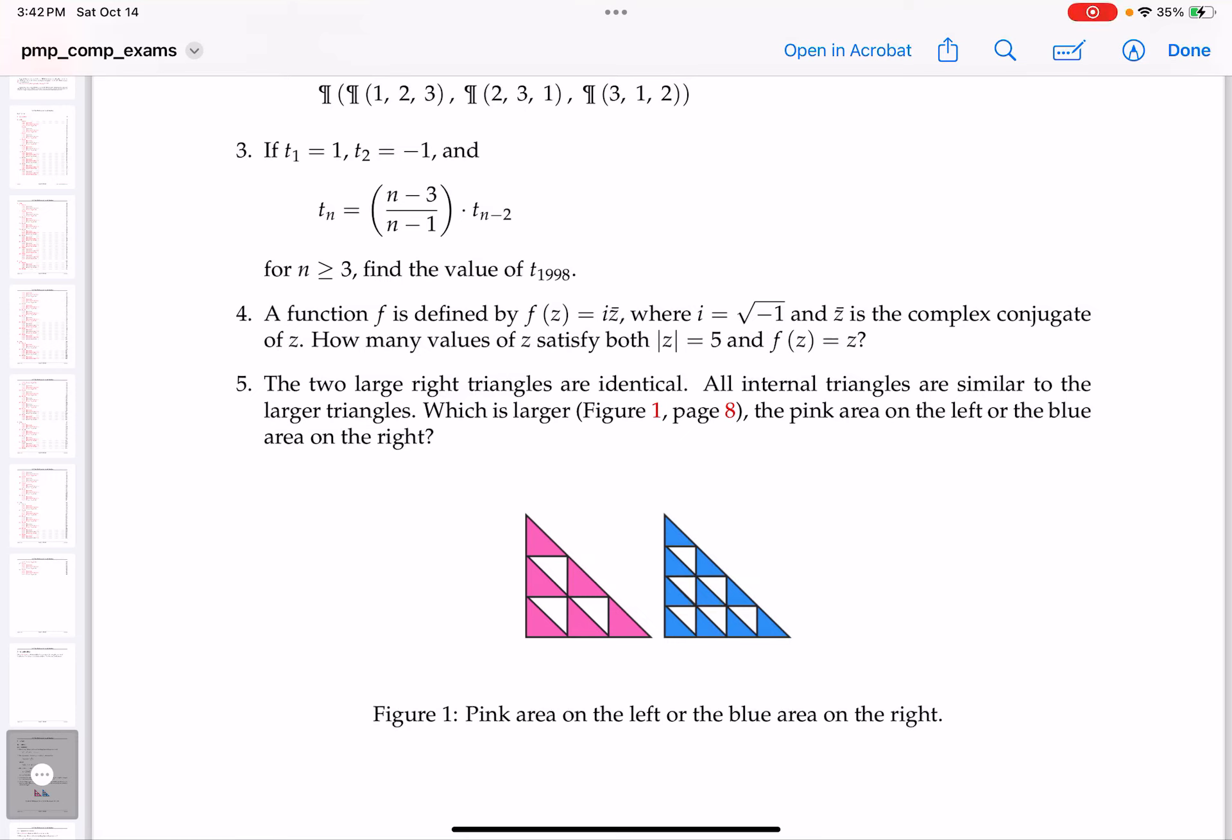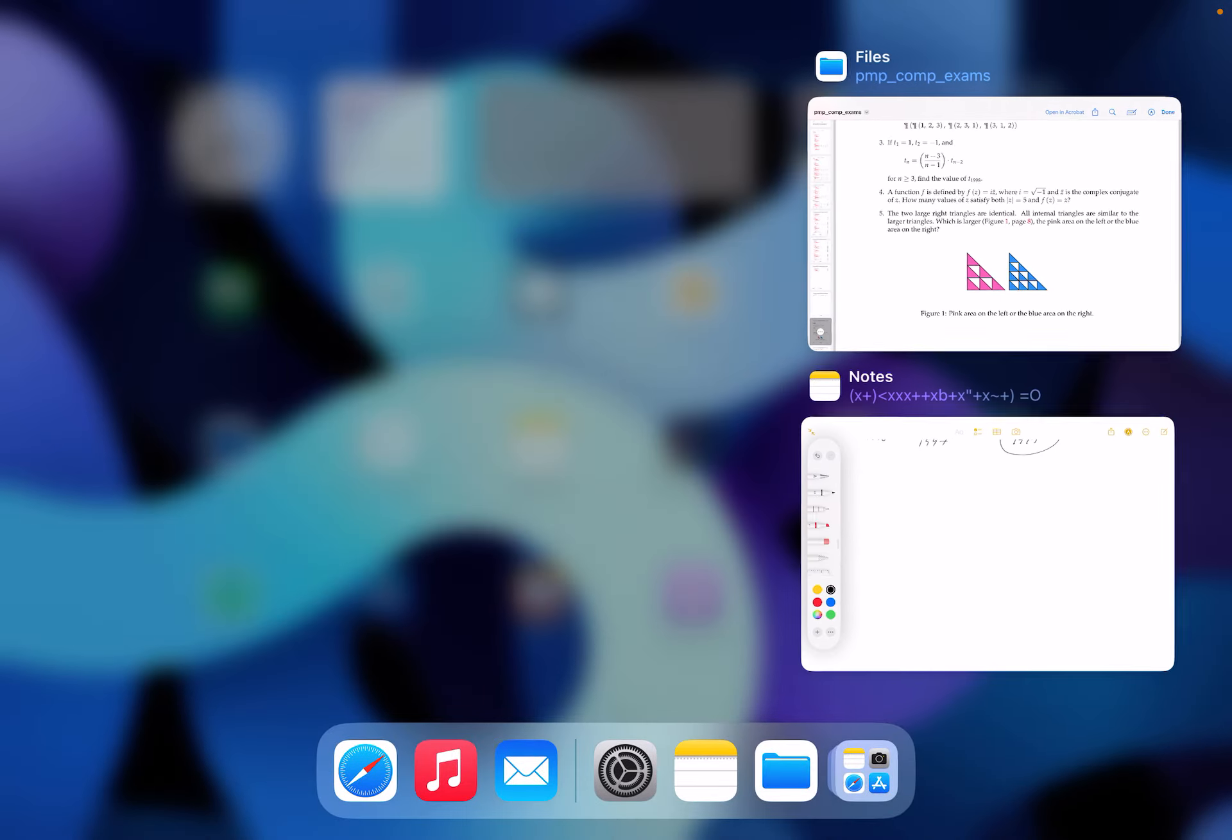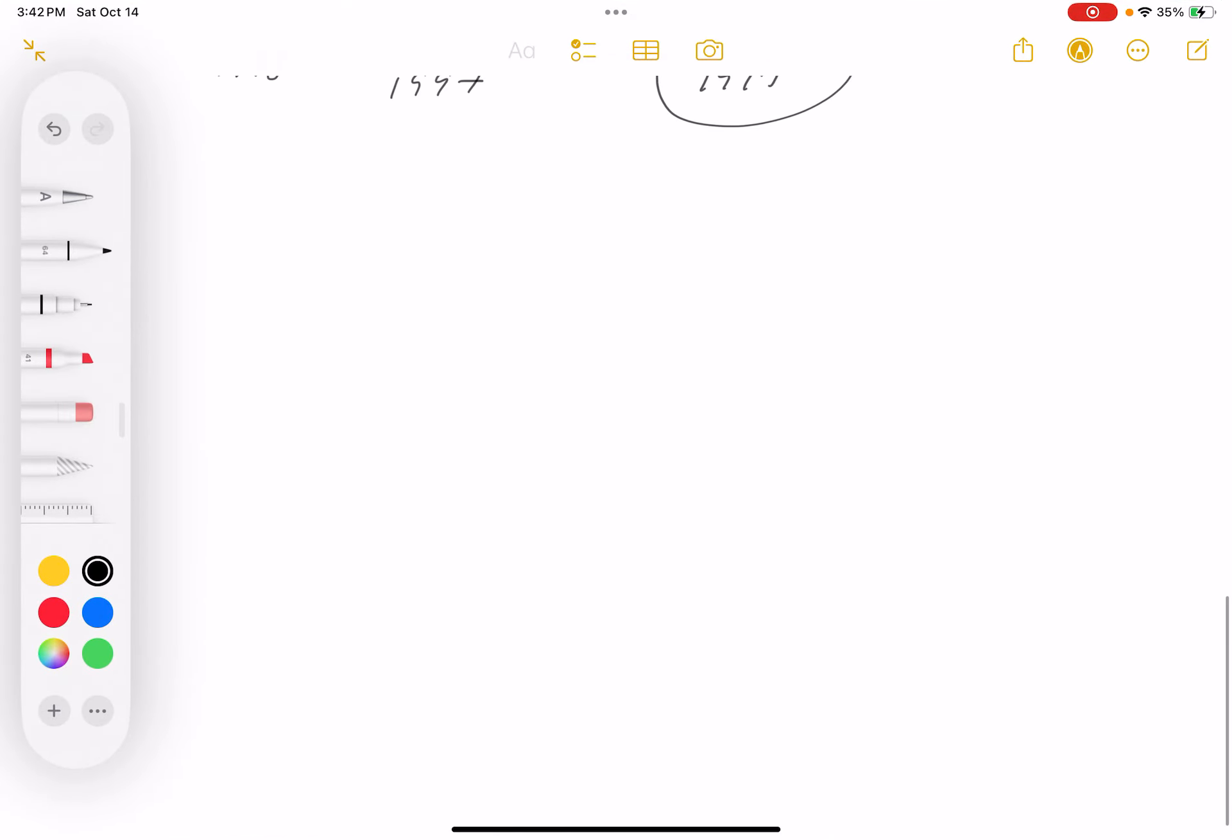Okay, number four. I'll go to the whiteboard to do it, but I want to read it first. The function f is defined by f of z equals i times z bar, where i equals the square root of minus one, and z bar is the complex conjugate of z. How many values of z satisfy that the modulus of z equals five and f of z equals z? So I'm going to go to the whiteboard and try to think about how I would do that.